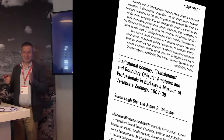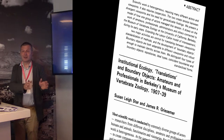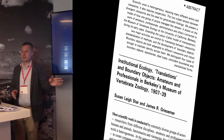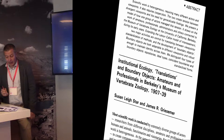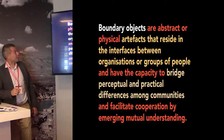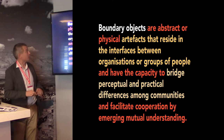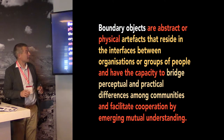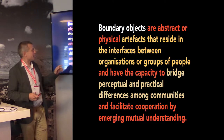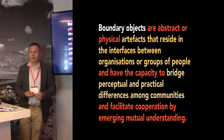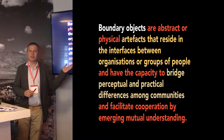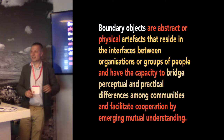The state of California, as a physical entity, is only something people have decided together — it's not inherently in the landscape. Boundary objects can be abstract or physical artifacts that reside at interfaces between organizations or groups of people. Their role is to bridge perceptual and practical differences among different communities and facilitate cooperation and emerging mutual understanding — or some subset of these functions.